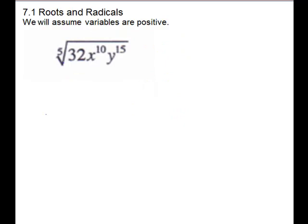Another example: fifth root of 32 — this one you'll use a lot — it's going to be 2, because 2 to the fifth is 32. For your variables, just divide: 5 into 10 goes 2 times, and 5 into 15 goes 3 times.